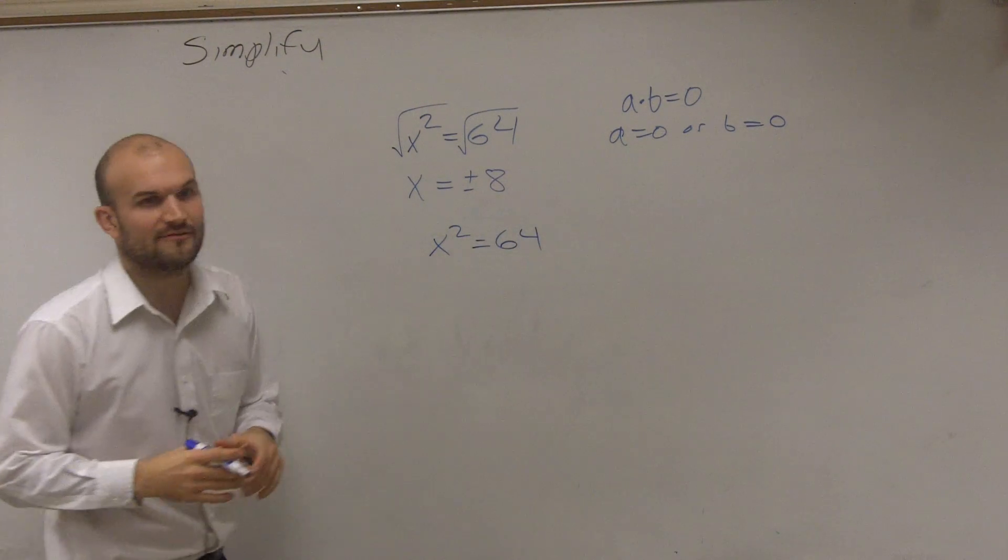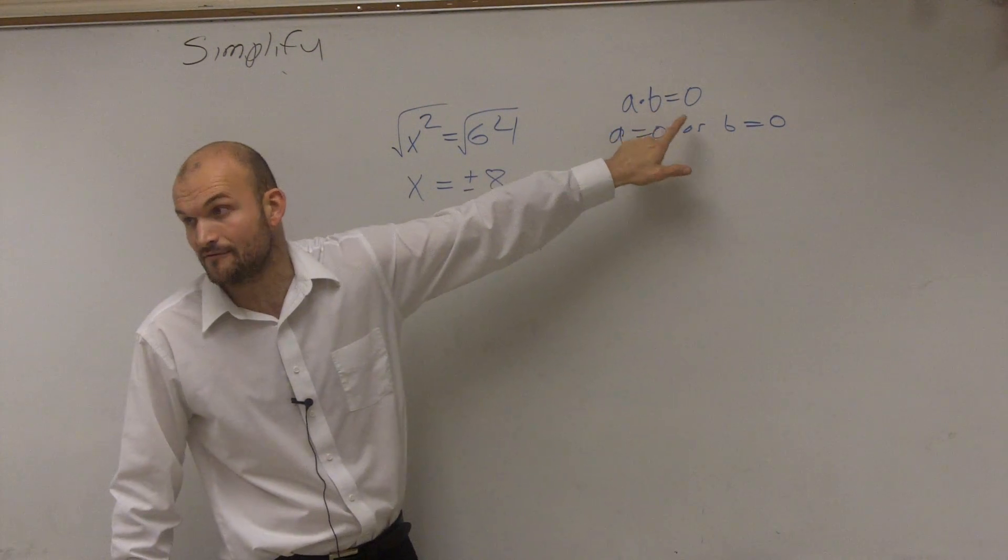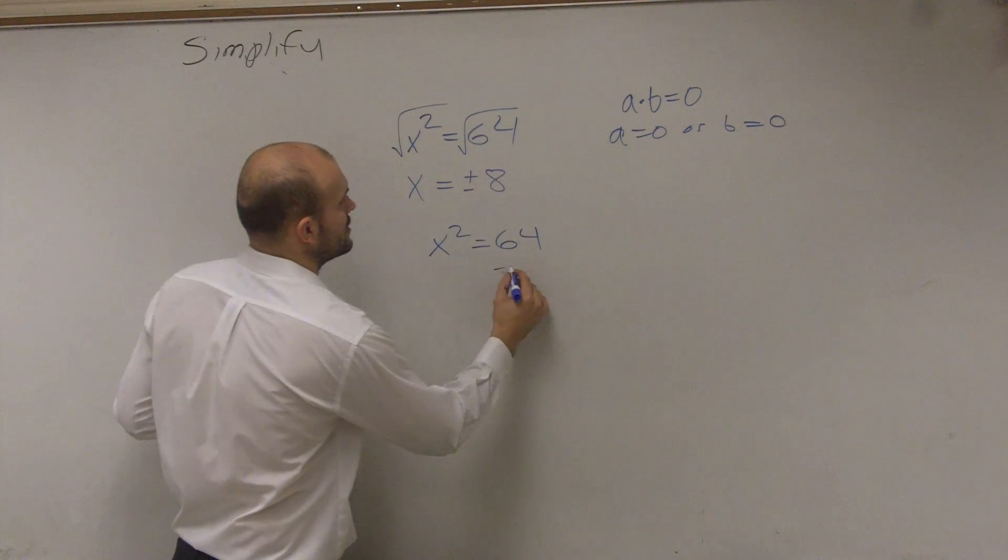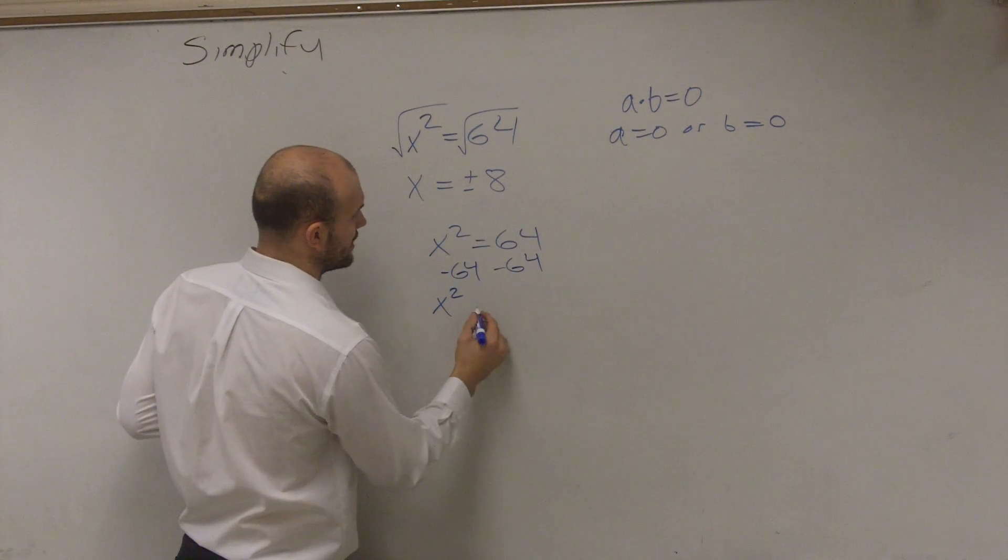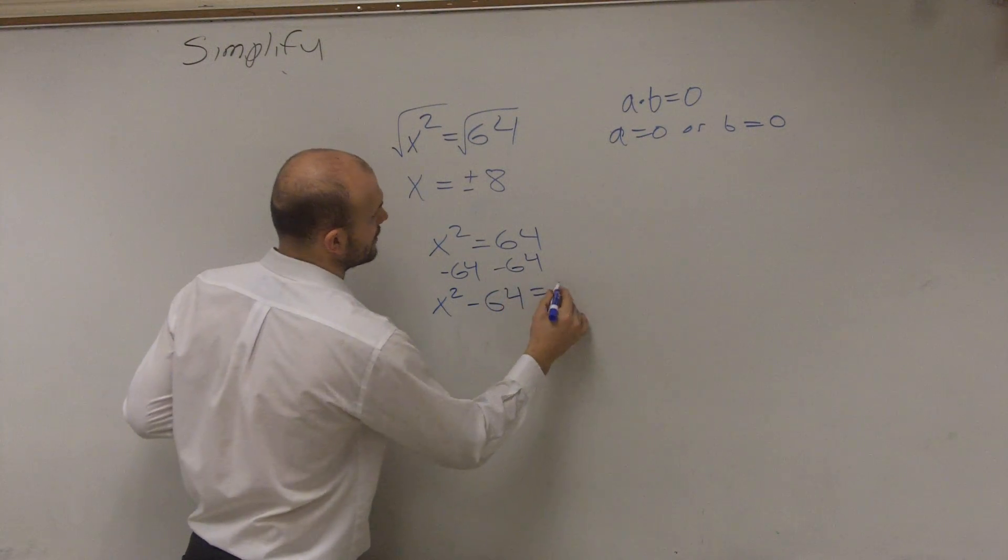So if I was going to do this by factoring, to use the zero product property, I first need to set it equal to zero. So I subtract 64 to the other side. Therefore, I have x² - 64 = 0.